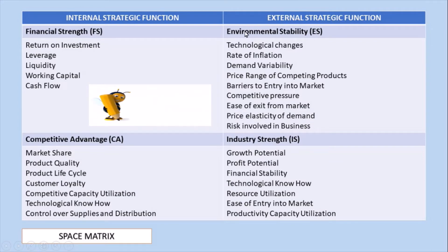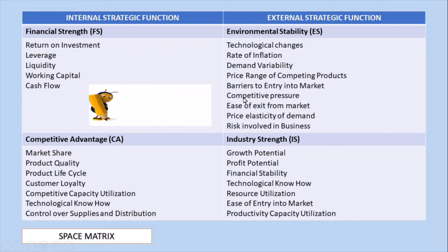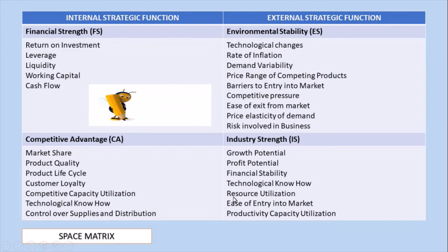The external strategic factors are divided into Environmental Stability and Industry Strength. Under Environmental Stability, we discuss technological changes, rate of inflation, demand variability, price range of competing products, barriers to entry into the market, competitive pressure, ease of exit from the market, price elasticity of demand, and risk involved in business. Under Industry Strength, we have growth potential, profit potential, financial stability, technological know-how, resource utilization, ease of entry into market, and productivity capacity utilization.